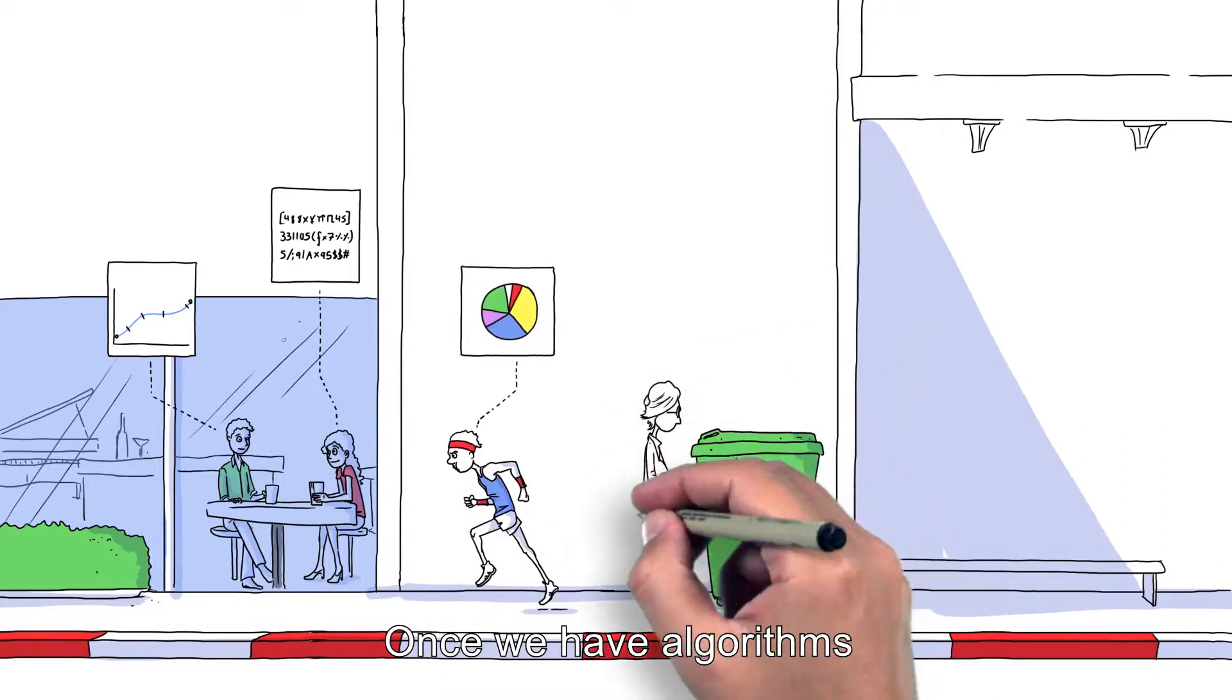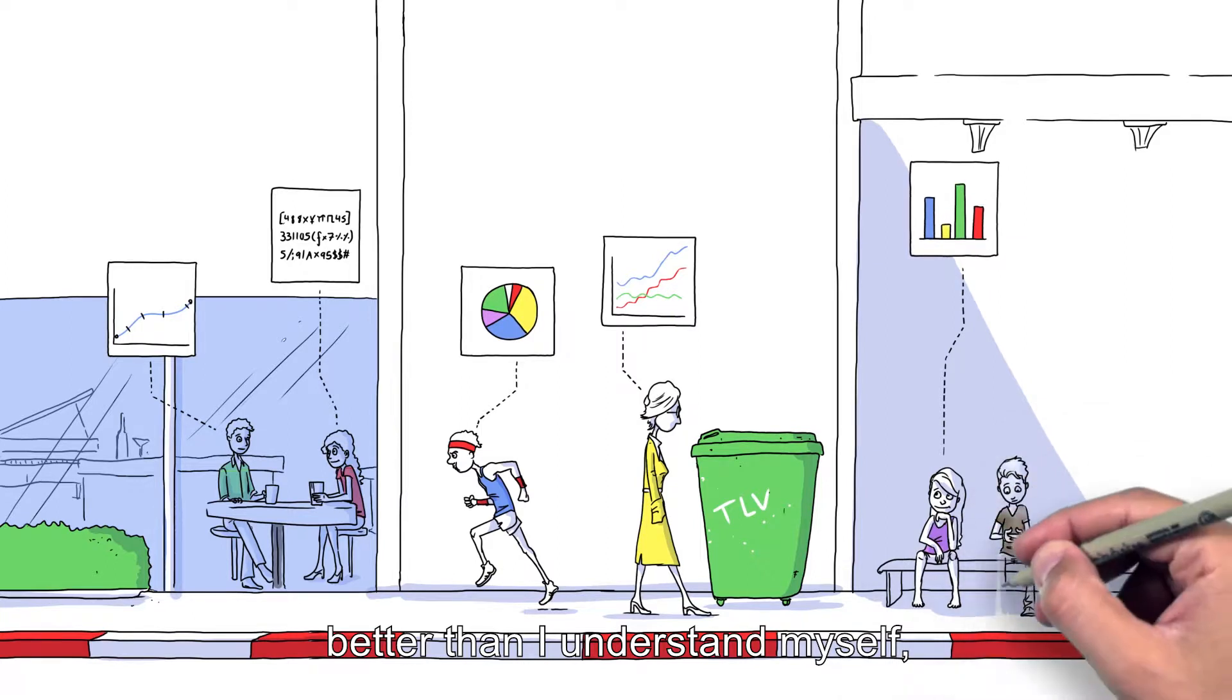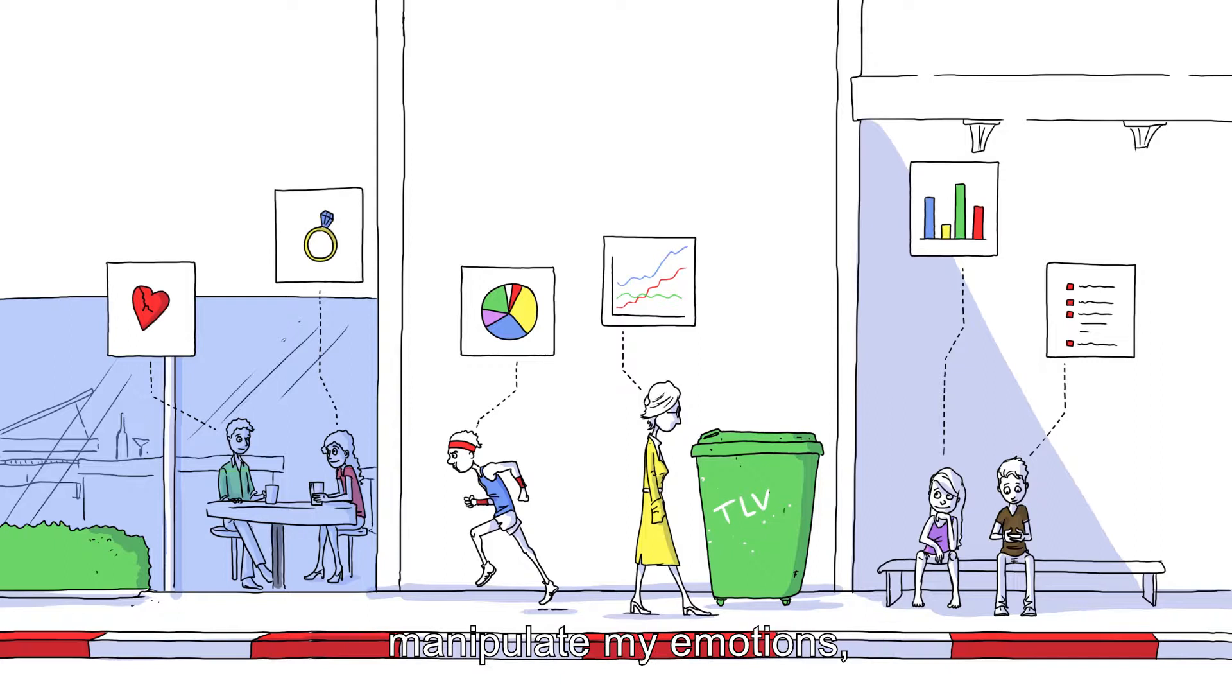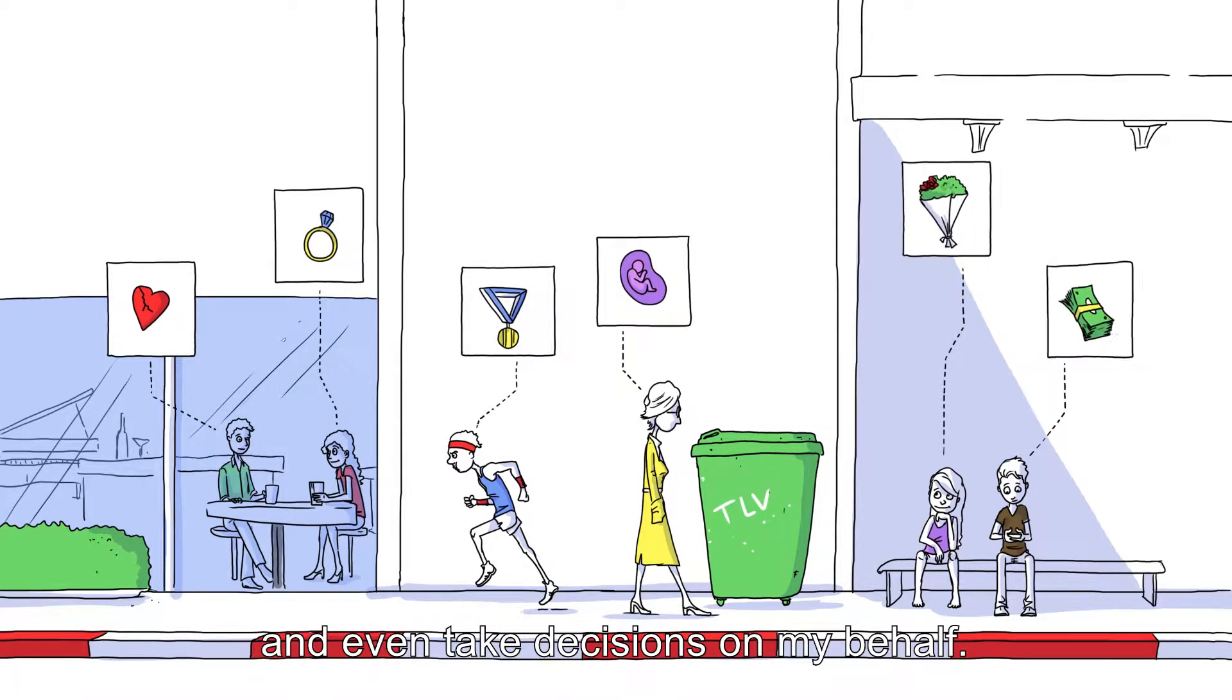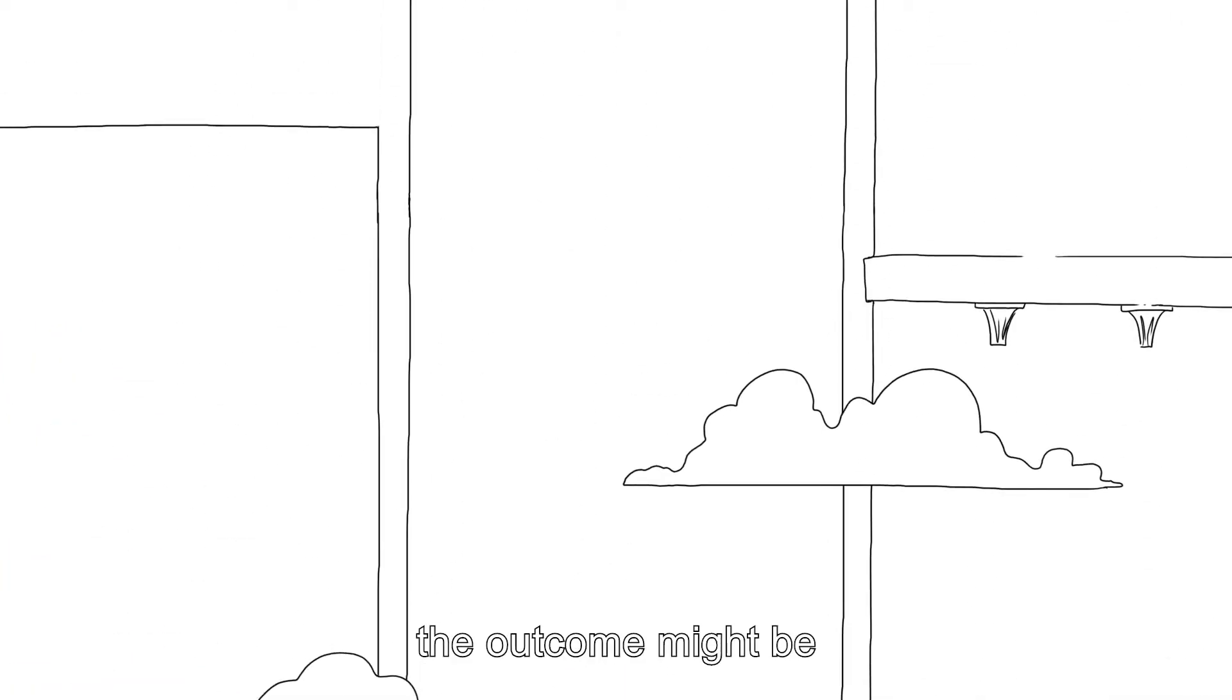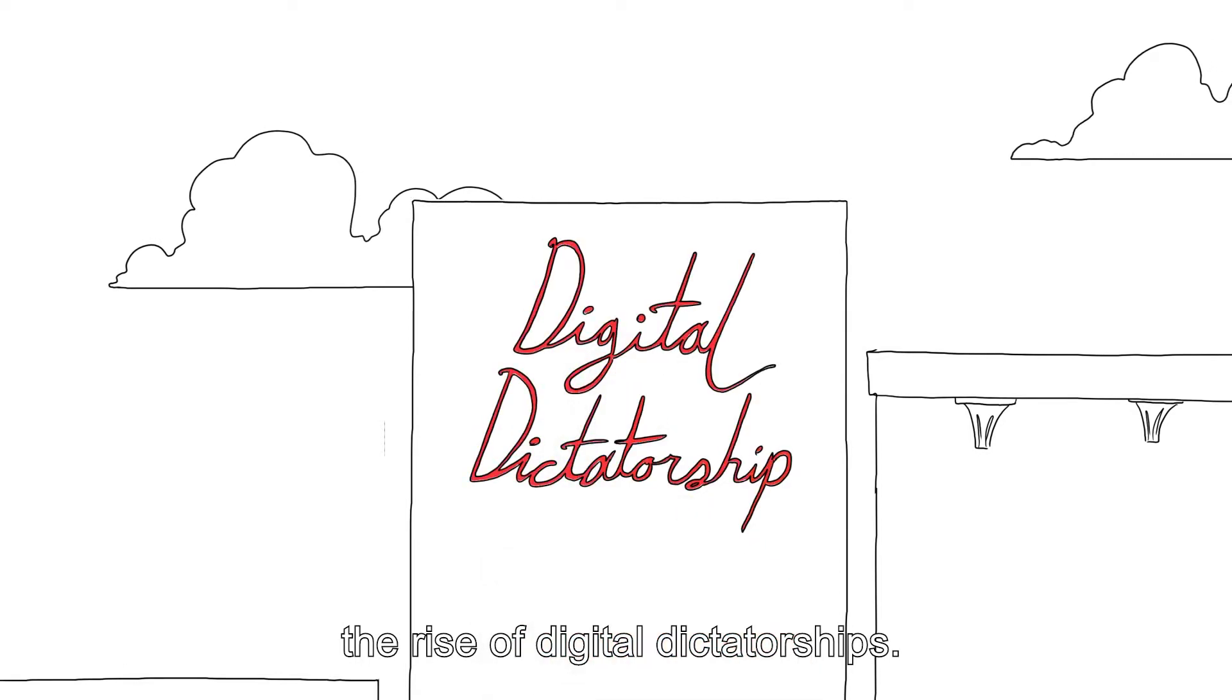Once we have algorithms that can understand me better than I understand myself, they could predict my desires, manipulate my emotions, and even take decisions on my behalf. And if we are not careful, the outcome might be the rise of digital dictatorships.